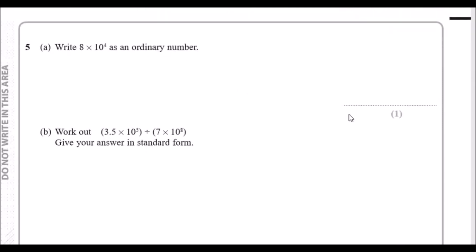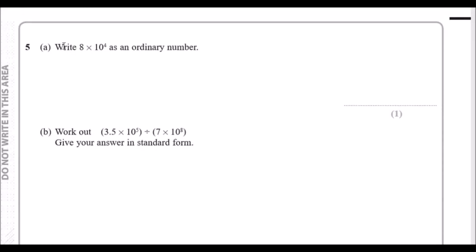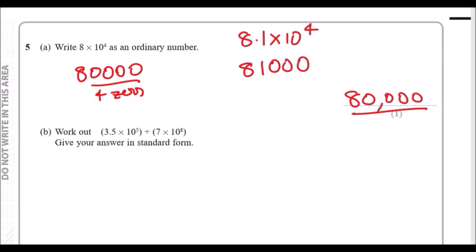Number five, part a: write 8 × 10⁴ as an ordinary number. Type it into your calculator to get 80,000. Alternatively, 10⁴ means four digits after the 8, so just write four zeros. If it were 8.1 × 10⁴, there should be four digits after the 8 — so 81,000.